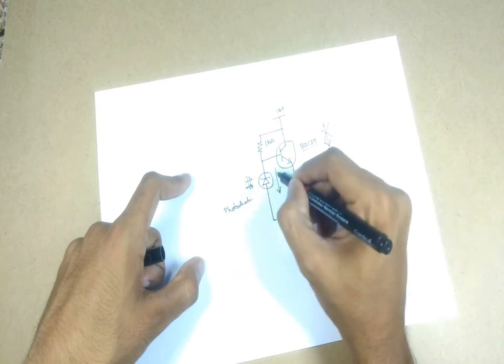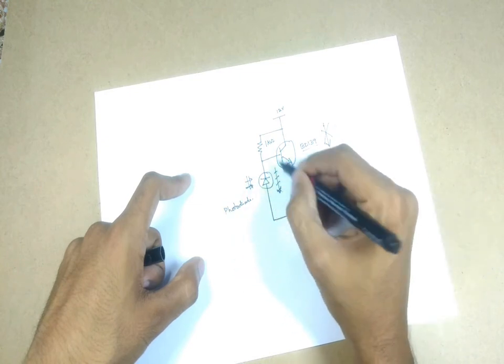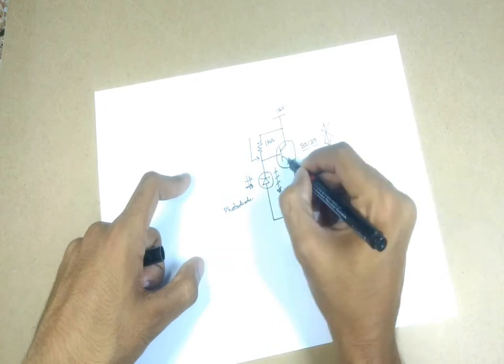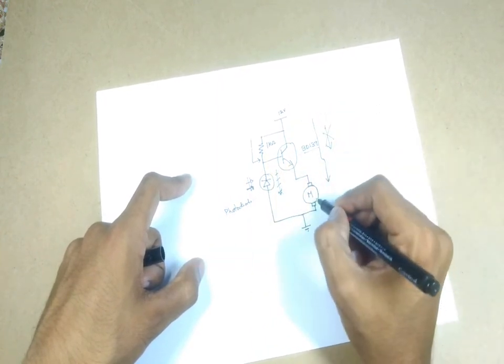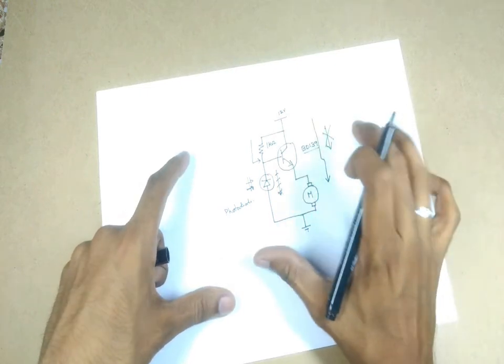When the light is shut down, the transistor is turned on and current flows from collector to the base, switching on the transistor and the motor starts turning. This is a simple circuit working.